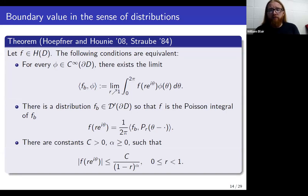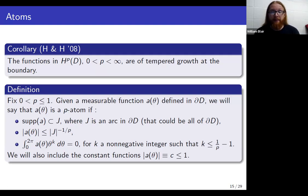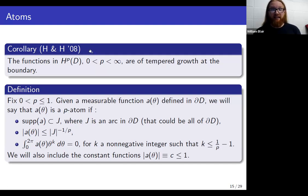Now, this is a result just about holomorphic functions. How does this fit into the picture we're painting about Hardy spaces? In their 2008 paper, Hoffner and Hooney showed that the holomorphic Hardy spaces are of tempered growth at the boundary, meaning they satisfy that third condition in the last theorem. So holomorphic Hardy space functions have boundary values in the sense of distributions for all p. This gives us an object to work with for small p that is perhaps nicer to think about than small p Lebesgue spaces.